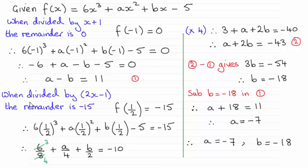We use the other result that when divided by 2x minus 1 the remainder is minus 15. And so when you put 2x minus 1 equal to 0, x would equal a half. And so we do f of a half equals minus 15. So when you substitute a half through here, equate it to minus 15, you get another equation in terms of a and b.